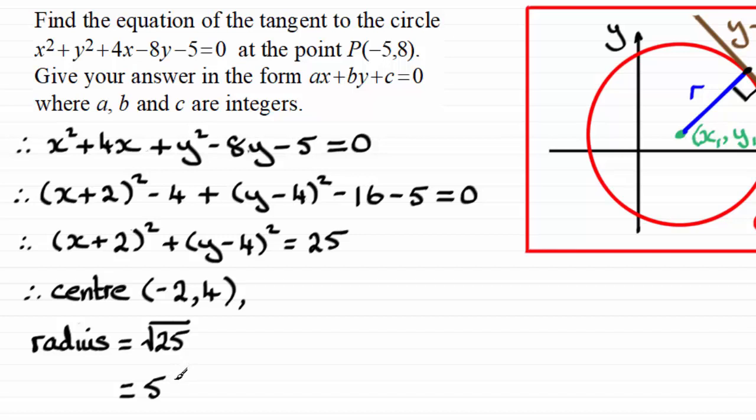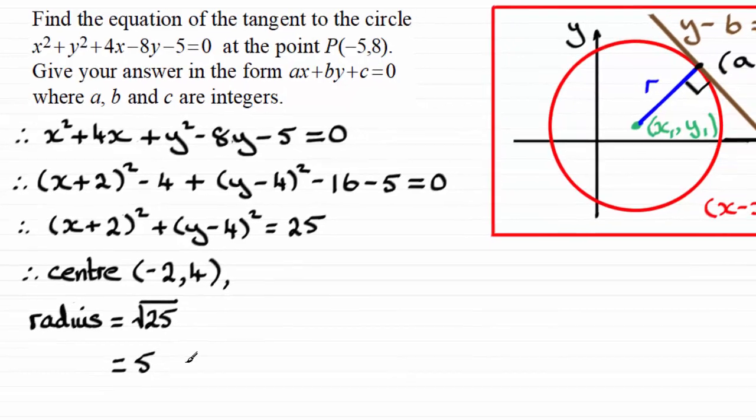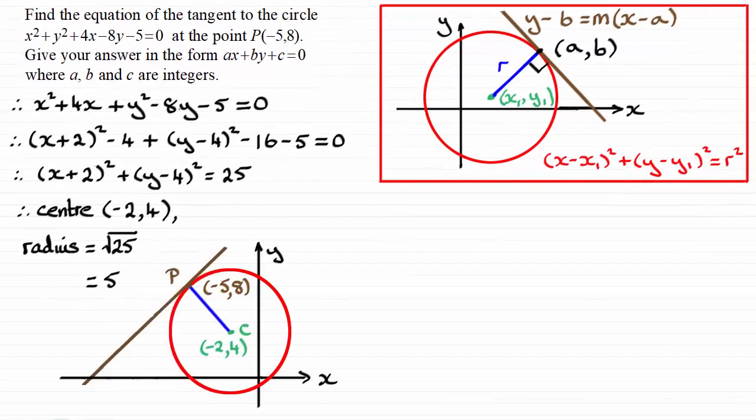So, what I need to do now is just draw a sketch of this question. We've got our centre here now at minus 2, 4. I've labelled it C. And we've got our point P on the circle with coordinates minus 5, 8. So, our tangent is going to be perpendicular to this line here, PC.